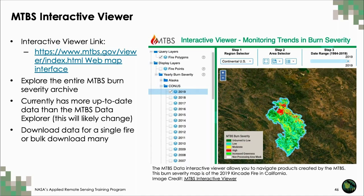I've also included the MTBS Interactive Viewer, a web map interface for exploring the MTBS data archive. It's less complex and has fewer functions compared to the Data Explorer, but it currently provides access to the entire MTBS archive including 2019, making it more up to date. You can also download burn severity and fire perimeter data from this platform, either for a single fire event or in a bulk download. The interactive viewer is more simplistic, so you might find it more user-friendly.